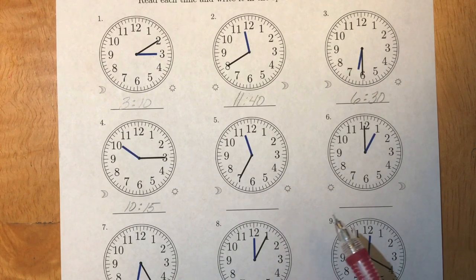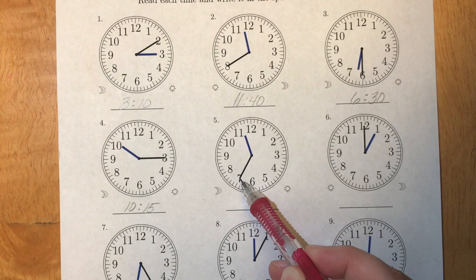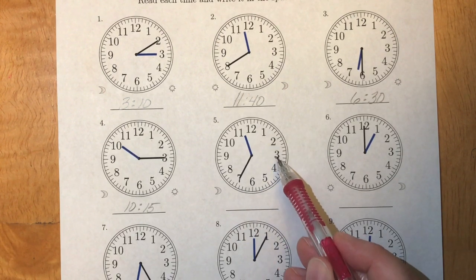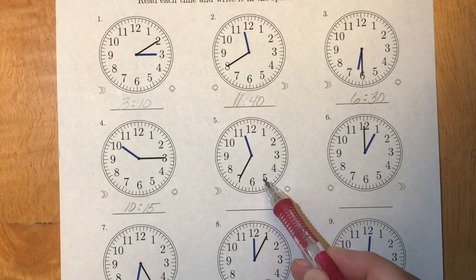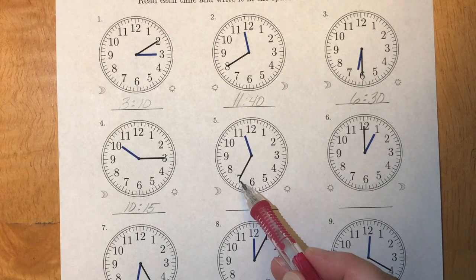Alright, so if we look at our minute hand, it's at the seven. When we skip count around by fives: five, ten, fifteen, twenty, twenty-five, thirty, thirty-five, we're at the thirty-five minute mark.